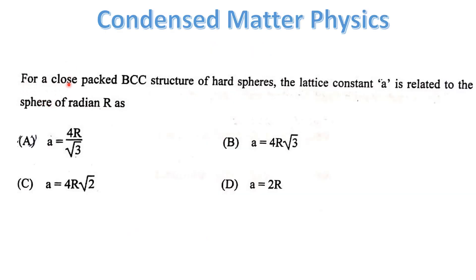For a close-packed BCC structure of hard spheres, the lattice constant a is related to the sphere radius r as: a is equal to 4r divided by root 3.